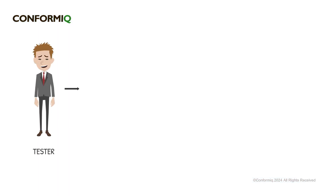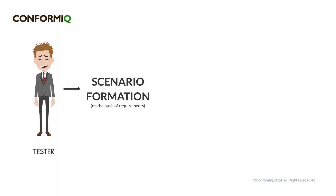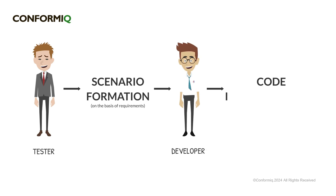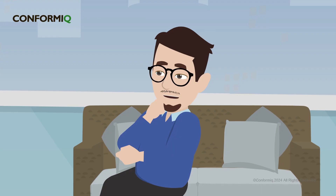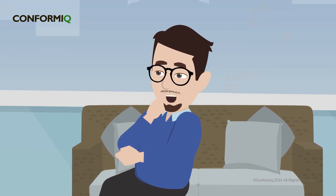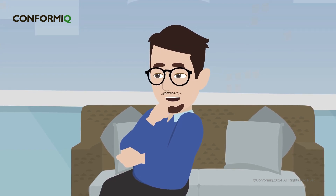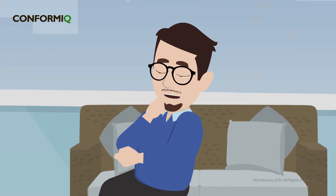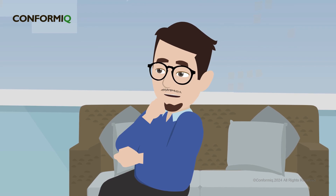The scenario formation is done by the QA or testers from customer requirements, and based on scenarios, the developers implement the code. As the scenario and code development is done by testers and developers, what is the role of BA or product owner?